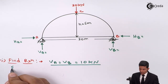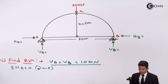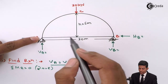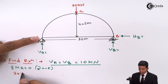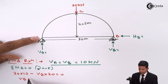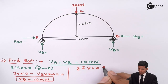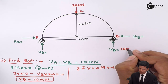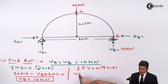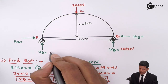Using summation of Fy equal to zero, upward positive: VA minus 20 plus 10 equals zero, therefore VA equals 10 kN. Either you can find it directly or solve step by step — both give 10 kN. Now we have found VA and VB, and next we need to find H, the horizontal thrust.